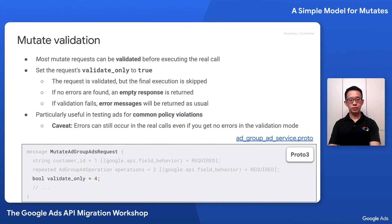Most mutate requests can be validated before execution by setting the request's validate_only field to true. The request is validated but the actual execution is skipped. If no errors are found, you get an empty response; if validation fails, an error message is returned. This is particularly useful for testing ads for common policy violations. Note that errors can still occur in real calls even after passing validation, due to transient server errors or policy changes.